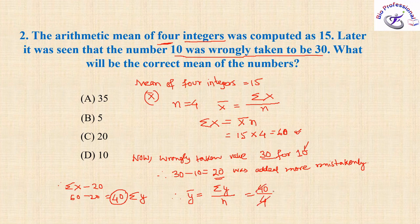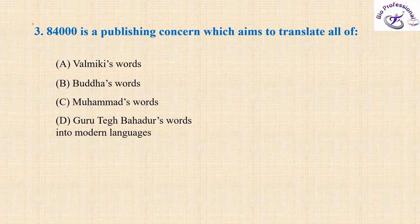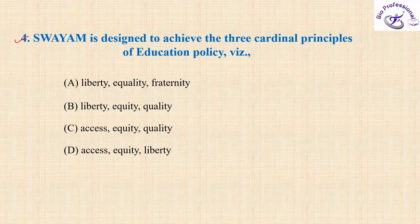So the corrected mean y-bar equals 40 divided by 4, which is 10. The answer is option D. It took a while to explain but that is how you solve this problem. Next: 84000 is a publishing concern which aims to translate all of the Buddha's words into modern languages and make them available to everyone. The answer is that option.